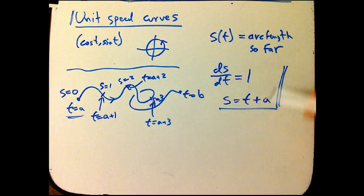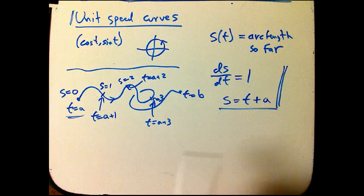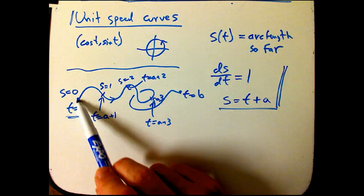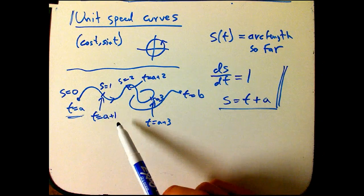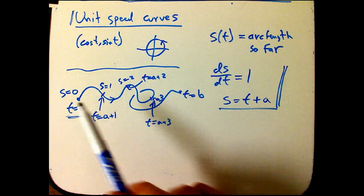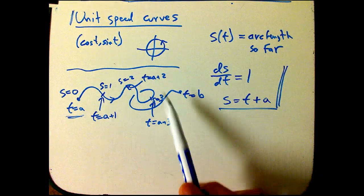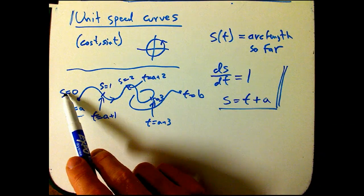So you can think about it sort of algebraically, differential equation, incredibly simple differential equation, or just geometrically, that if he's going at unit speed to go one unit of distance, it's going to be one unit of time. So there's a very simple relationship between the time values and the position values.